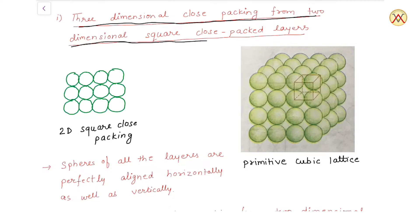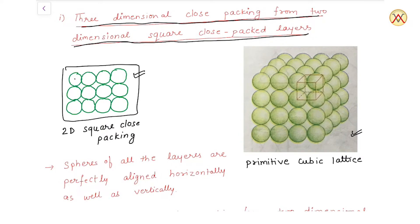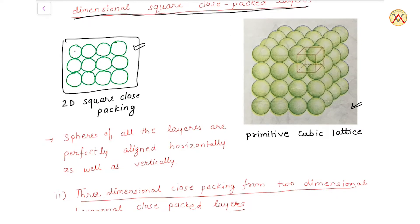First, we will discuss three dimensional close packing from two dimensional square close packed layers. In two dimensional square close packing, as shown in the diagram, suppose you have a table and some balls. If you arrange the balls in a 2D square arrangement, you get this type of packing — one layer is formed. Now you can place another layer exactly on top of the first, with each ball directly above the ball below.